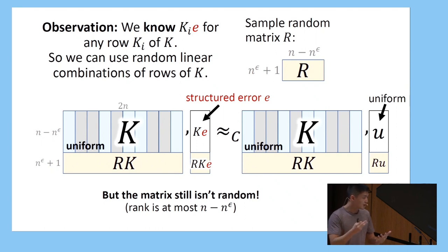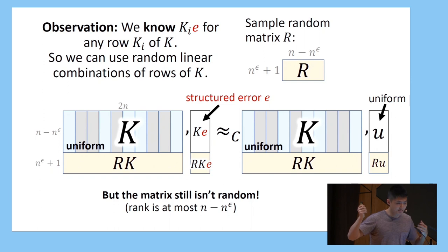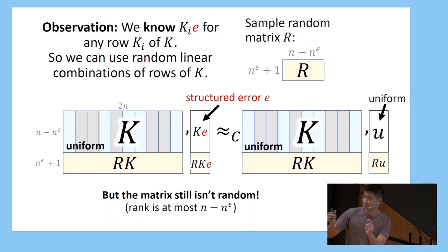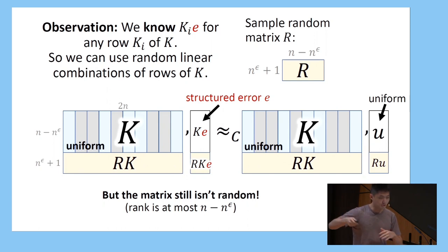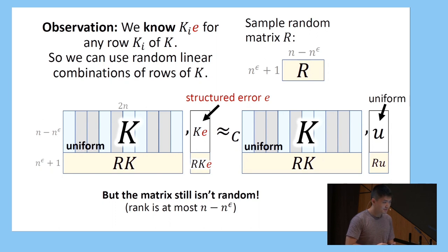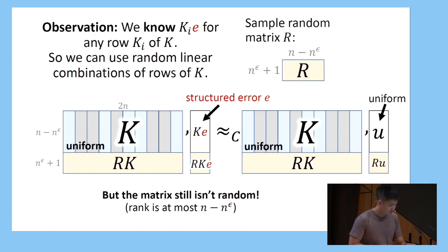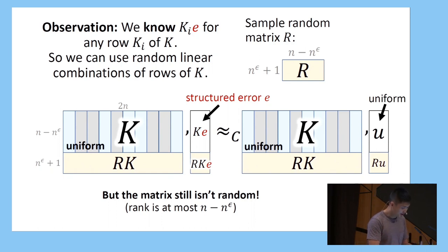But we're still not done, because this matrix doesn't actually look random. The first n minus n^epsilon rows are uniform, but the last n^epsilon + 1 rows are just random linear combinations of the previous rows. A truly random matrix would look nothing like this — you can see this just from the rank: this matrix has rank at most n minus n^epsilon, whereas a random matrix would have rank n+1.